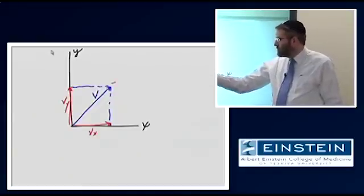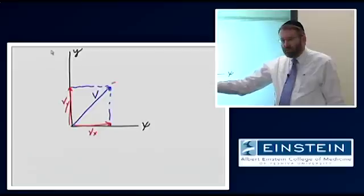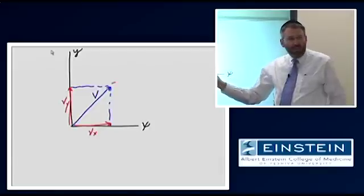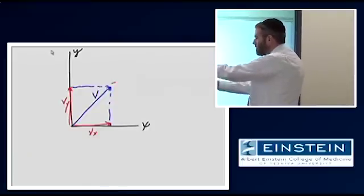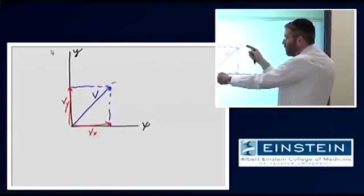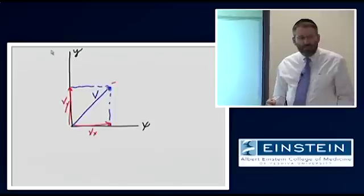We can take the resultant or sum of those, the blue vector v, and decompose it into these two. Regardless of which way I display this to you, as the two components or as the resultant or sum, it's exactly the same thing.